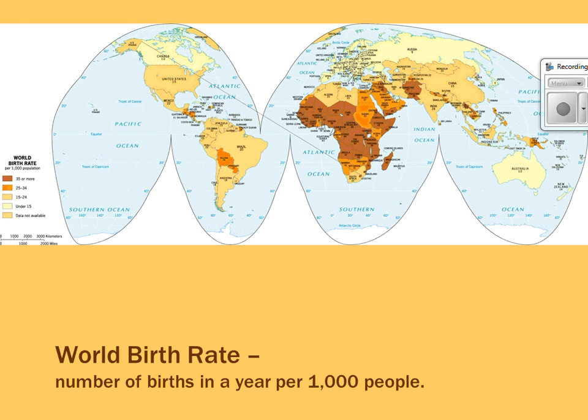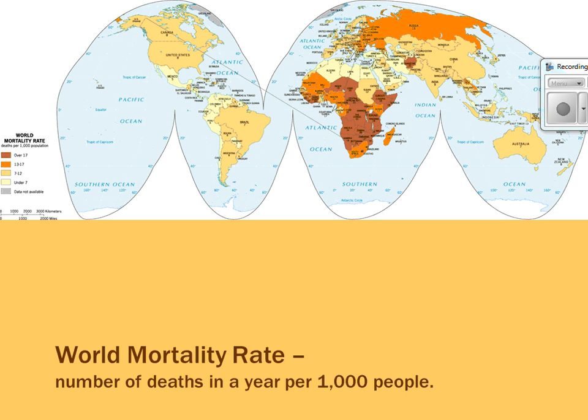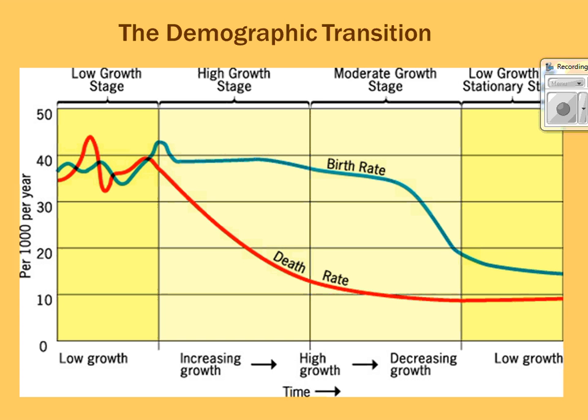There are four, possibly five stages related to certain characteristics of birth rates and death rates. A birth rate is the number of births per year per thousand — Sub-Saharan Africa shows darker colors indicating high birth rates on the map. The world mortality or death rate is deaths per thousand people per year — Sub-Saharan Africa also shows high death rates.